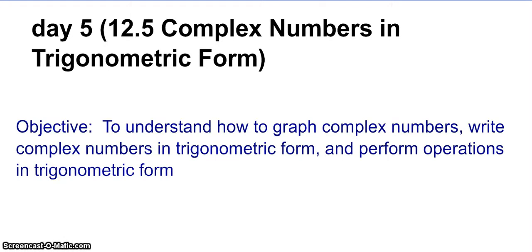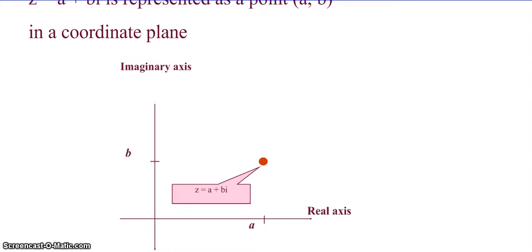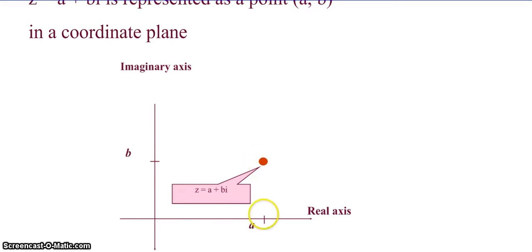Today we're going to look at graphing complex numbers, writing complex numbers in trig form, and performing operations when the complex number is written in trig form. So first, the complex plane. If we have some complex number z, and it equals a plus bi, we can represent this on what we call our complex plane as a point (a, b), where a is what we normally think of as our x value — representing the real number — and b is what we normally think of as our y value, representing the imaginary component. We can plot a plus bi by going a units to the right and b units up.